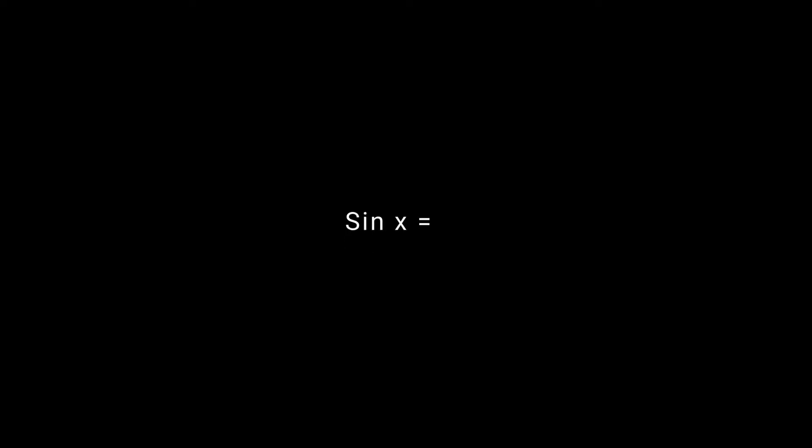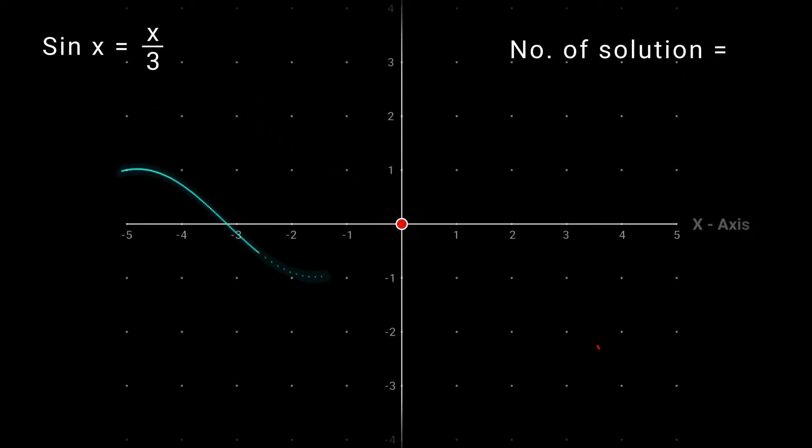Let's try to solve this equation: sine x equal to x by 3. We have to find the total number of solutions for this equation. Now draw y equal to sine x and then draw y equal to x by 3.